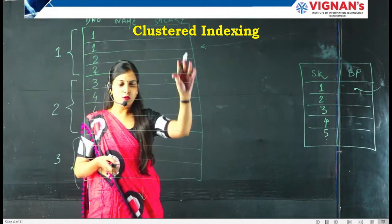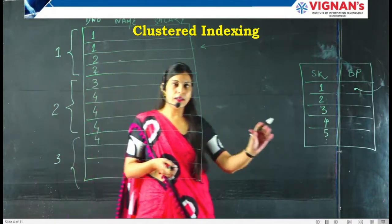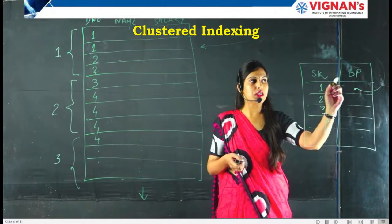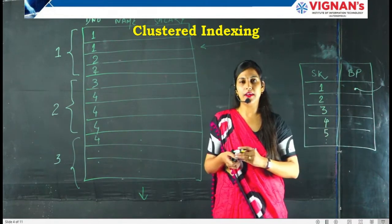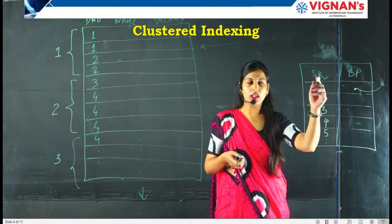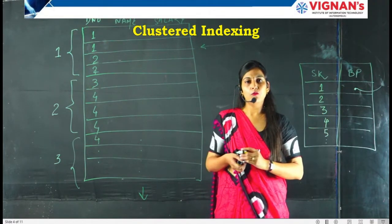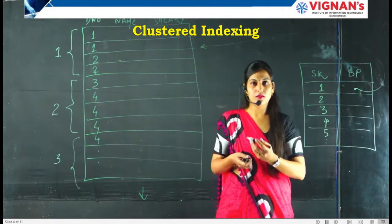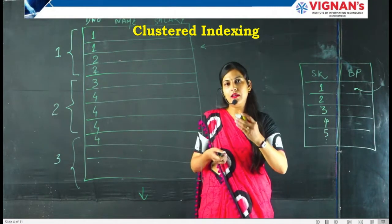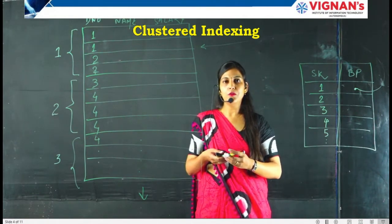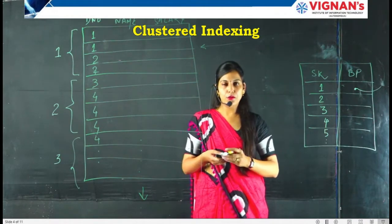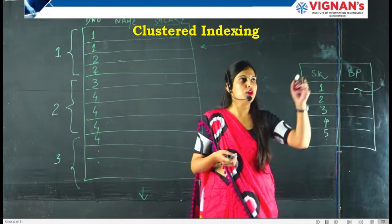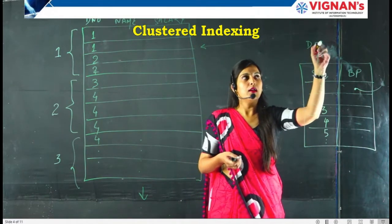Based on this database file we will create an index table. The index table will have two attributes: search key and block pointer, since an index is defined on these two attributes. The attribute I will keep as my search key is department number, because department number is sorted but does not have unique values — multiple records share the same individual value. So my search key will be department number.